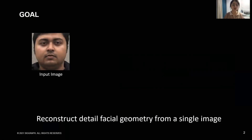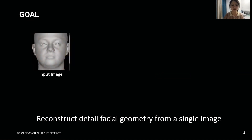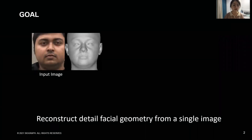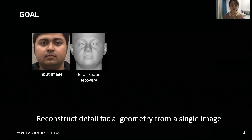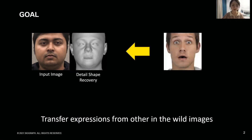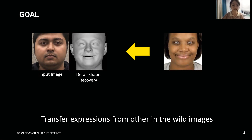Given a single image of a human face, our method estimates an accurate 3D model of the person's head with detailed wrinkles. We go further than previous work to make the facial details animatable. For example, here we estimate the 3D face shape, expression, and details from an image. Then, given another image with a different expression, we transfer the expression to the first person. The key novelty is that the details are realistically animated.